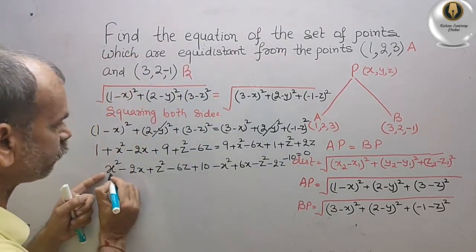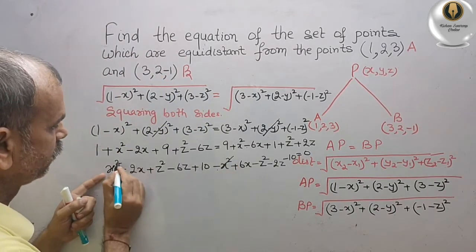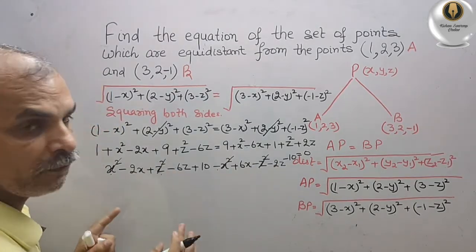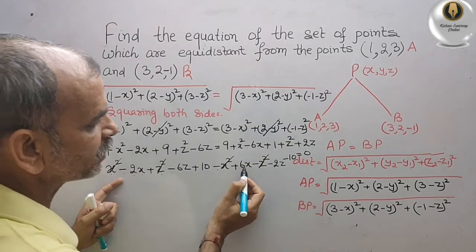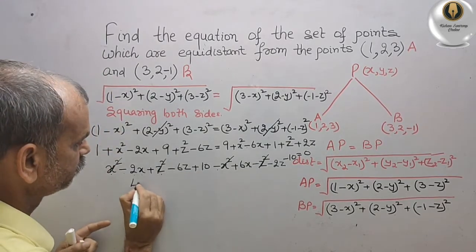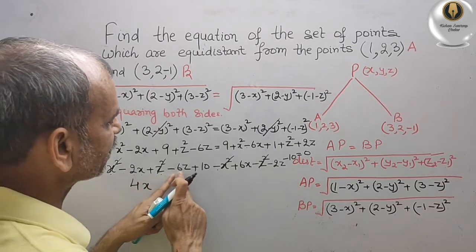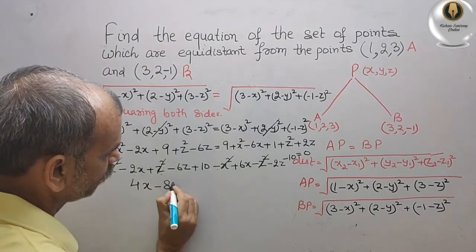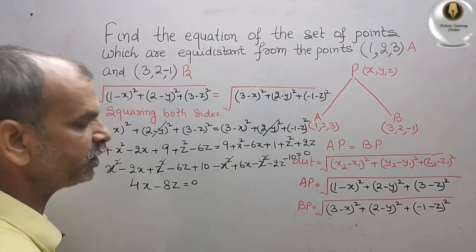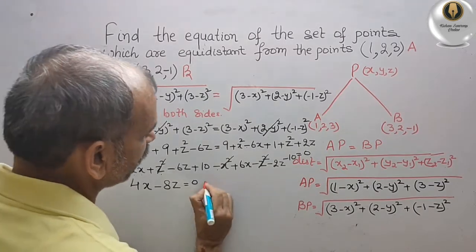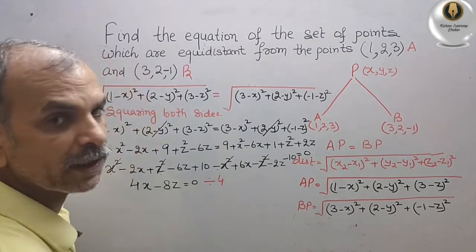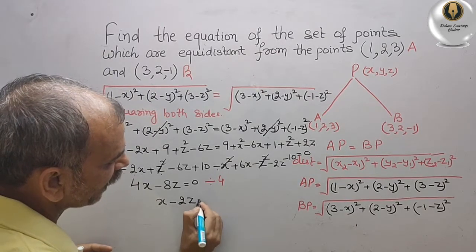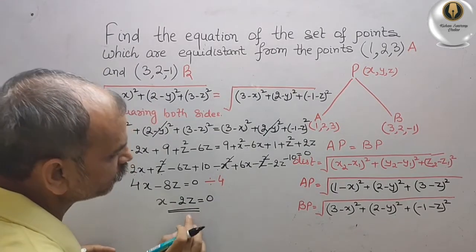After canceling x square and z square terms, we get minus 2x plus 6x equals 4x, and minus 6z minus 2z equals minus 8z. So we have 4x minus 8z equals 0. This is divisible by 4, so divide by 4. We get x minus 2z equals 0. Therefore, this is your answer.